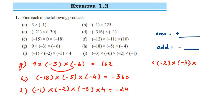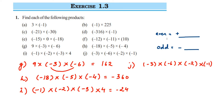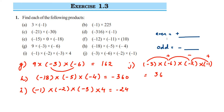The last problem, J: minus 3 into minus 6 into minus 2 into minus 1. Multiply the numbers: 3 into 6 into 2 into 1 gives 36. Now let's check the negative signs — we have 4: 1, 2, 3, 4. 4 is an even number, so the final answer will have a positive sign. Or step by step: minus into minus is plus, plus into minus is minus, minus into minus is plus. Final answer is positive 36.